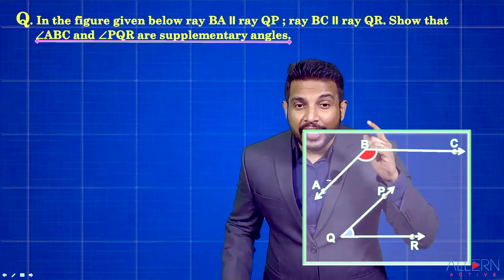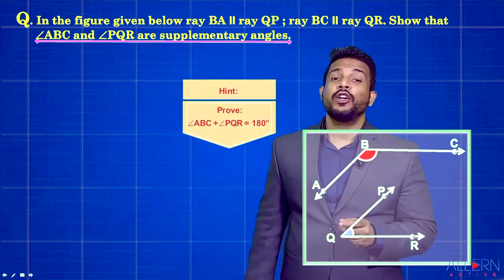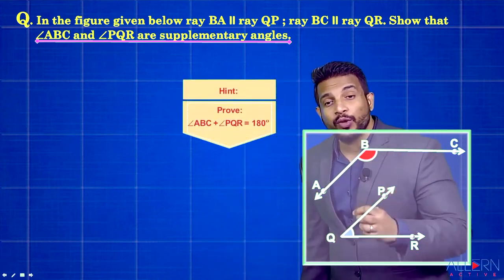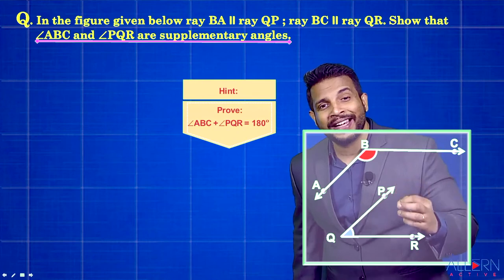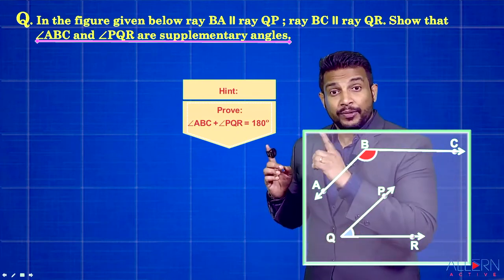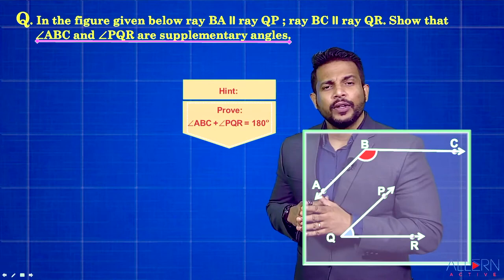That means we need to prove that angle ABC plus angle PQR is equal to 180 degrees. That's the proof we need — we get supplementary angles if we can prove this.